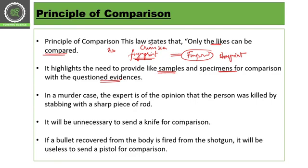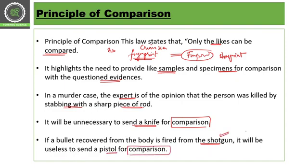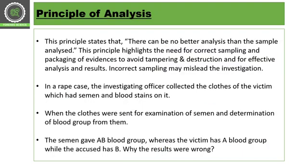Forensic science majorly depends on comparison. In a murder case, for example, if the expert is of the opinion that the person was killed by stabbing with a sharp piece of glass, there is no point sending a knife for comparison. Similarly, if a bullet recovered from a dead body was fired from a shotgun, it will be useless to send a pistol for comparison — we have to send the shotgun. So the principle of comparison says only likes can be compared.